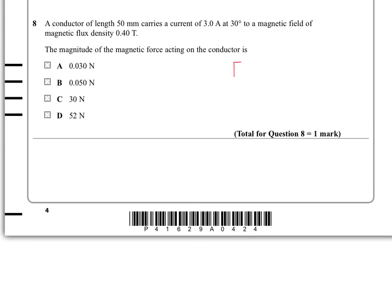So the force here is equal to BIL sine of theta, where theta is the angle between the conductor and the field. So that's 0.4 times 3 amps times 50 times 10 to the minus 3, because it's in millimeters, times the sine of 30 degrees.